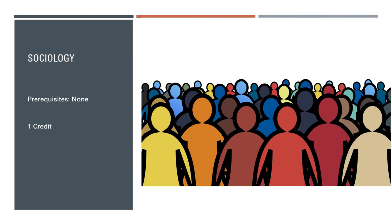Our next elective option is Sociology. Sociology is the study of human behavior in society, and it examines the causes and consequences of this behavior. Since most human behavior is social, sociology covers a wide range of topics. A component of this course is the development and use of research skills and statistical data.